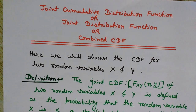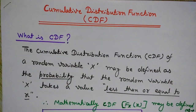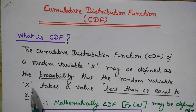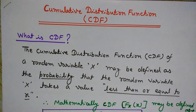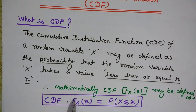Before understanding the joint CDF, let's review what CDF is. We can define the cumulative distribution function CDF of a random variable X as the probability that the random variable X takes a value less than or equal to x. Mathematically, the CDF is denoted with a capital F, while a small f is used for the PDF, probability density function.